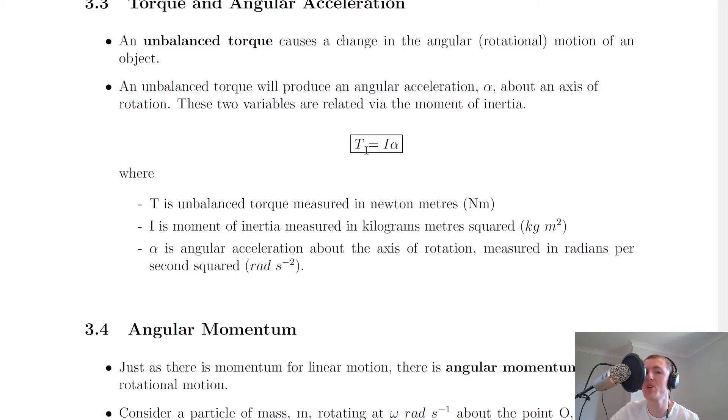So if we're talking about linear motion, this is actually the form of F equals ma. Remember we said moment of inertia I is like the angular form of linear mass, and angular acceleration is obviously the angular form of acceleration, and torque is the angular form of force. So this is actually just F equals ma, but for angular motion.